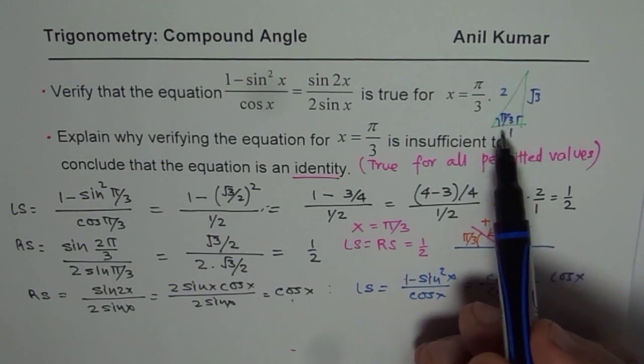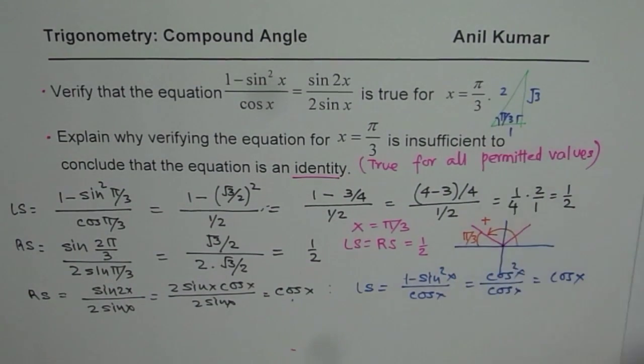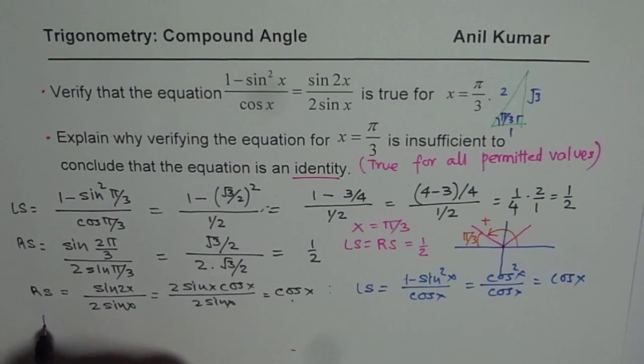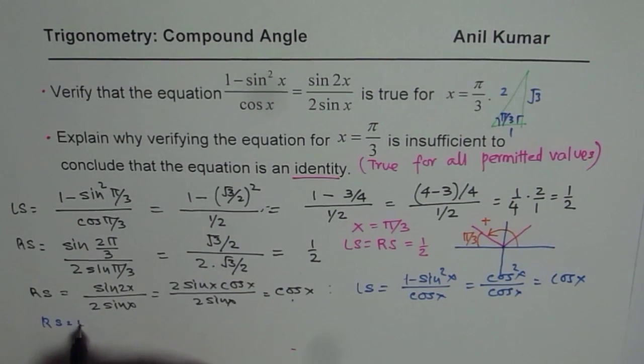So both sides are actually equal to cos x. You can see here, cos(π/3) is 1/2. So you get cos x. That is how you could say that when the right side equals the left side, then it is an identity.